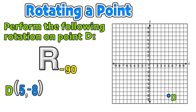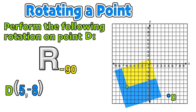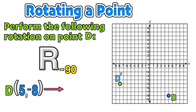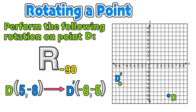Point D lies in the fourth quadrant with coordinates (5, −8). We're going to take a visual approach: imagine taking that fourth quadrant with point D inside it and rotating the entire quadrant clockwise. We can then find the coordinates of image D′ at (−8, −5).